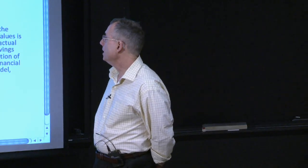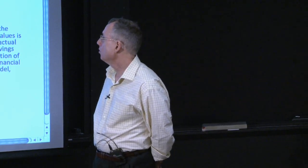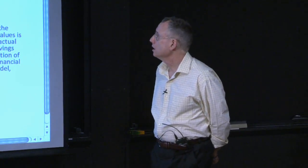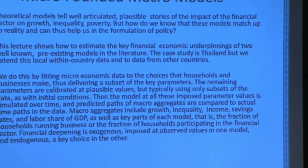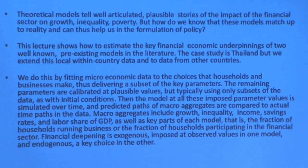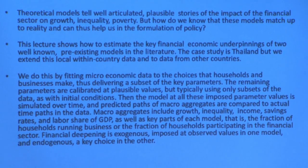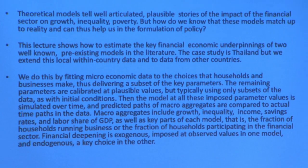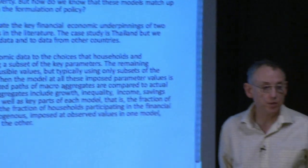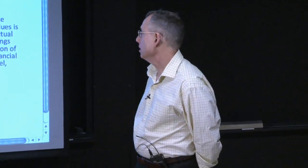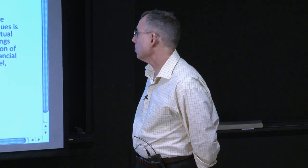How are we going to fit it? We're going to take the assumed micro financial underpinnings and estimate those underpinnings, getting the bulk of the key parameters of the model pinned down from the micro data. There'll be a few remaining parameters we can't get from household or business choice, and we'll calibrate those. Then we'll simulate the models and get what the model would predict for growth, inequality, income, savings, and labor share of GDP.